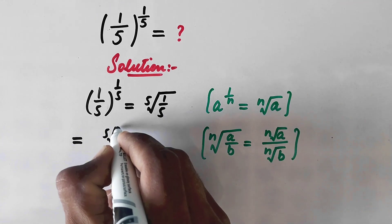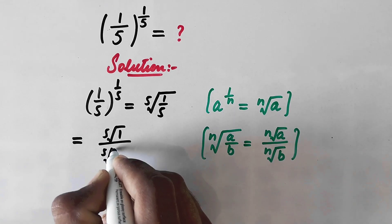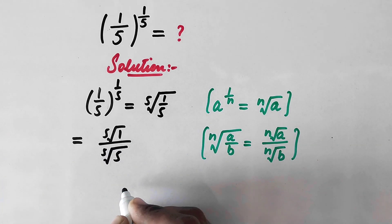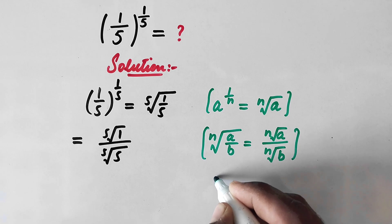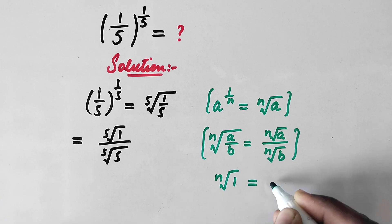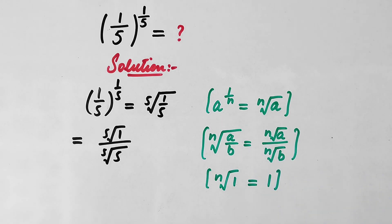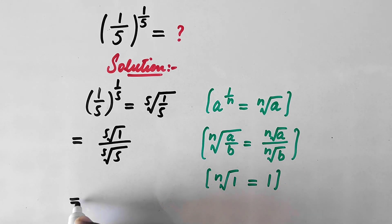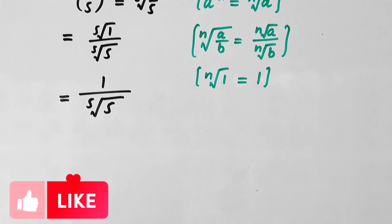This gives us the fifth root of 1 divided by the fifth root of 5. We now apply the rule that the nth root of 1 equals 1, so the expression becomes 1 divided by the fifth root of 5.